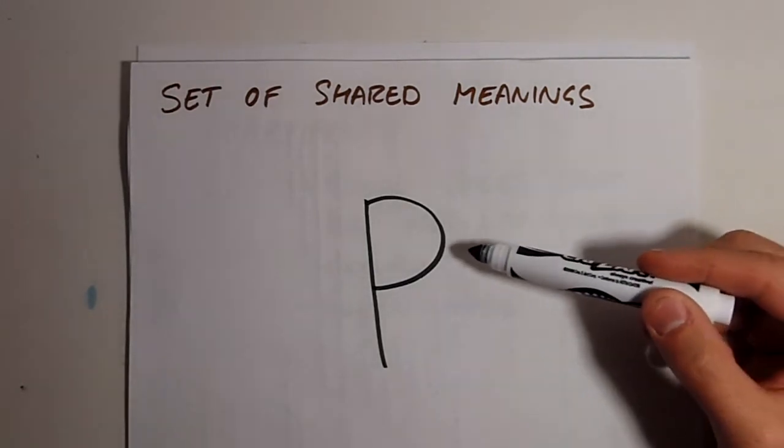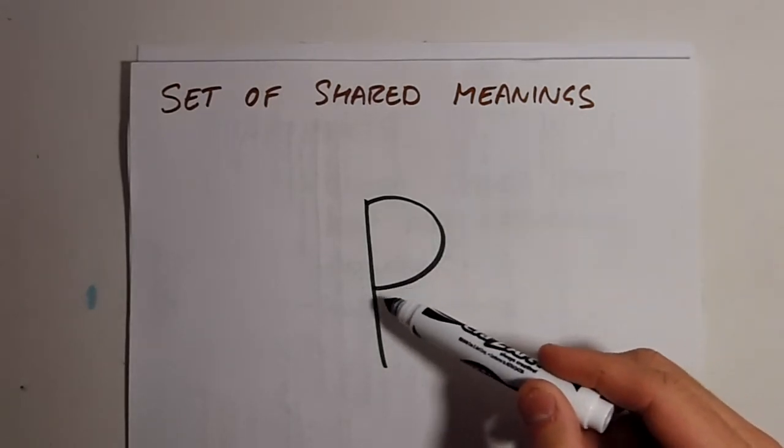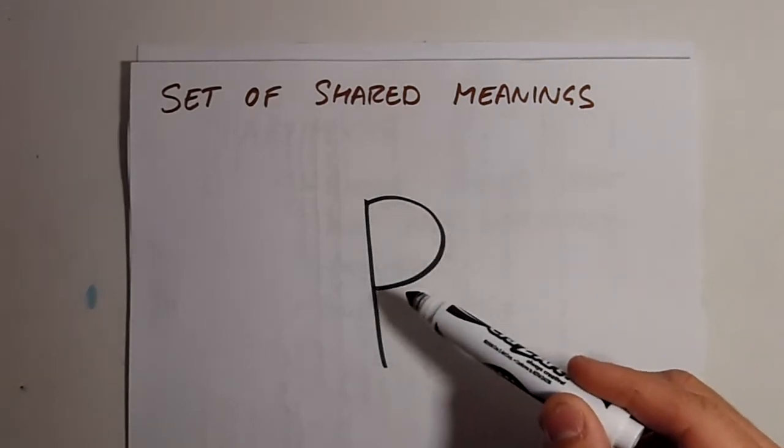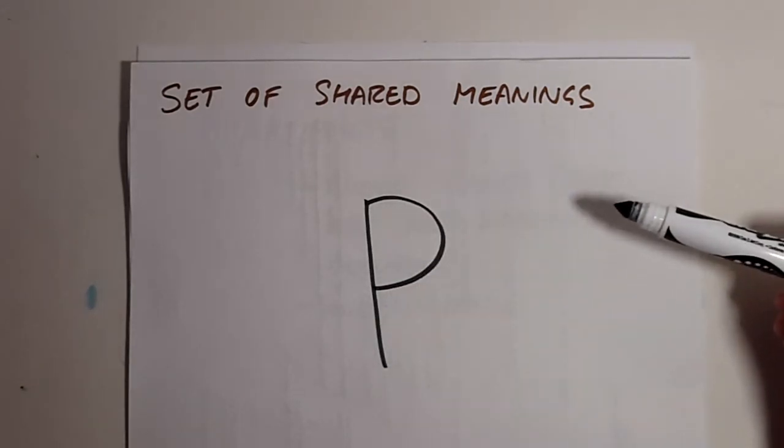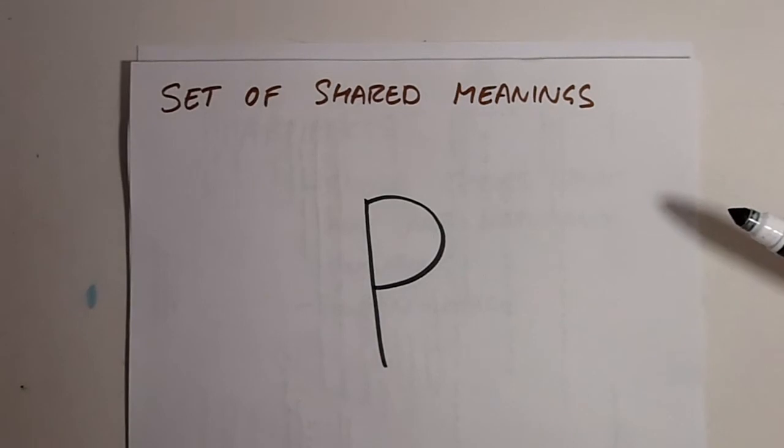Now, other people watching this may have grown up with the Cyrillic alphabet, speaking, for example, Russian. And in this case, they would recognize this symbol not as the letter P, but as the letter R, such as riba or robota. People who recognize this symbol as the letter R share the Cyrillic language or Russian language culture.